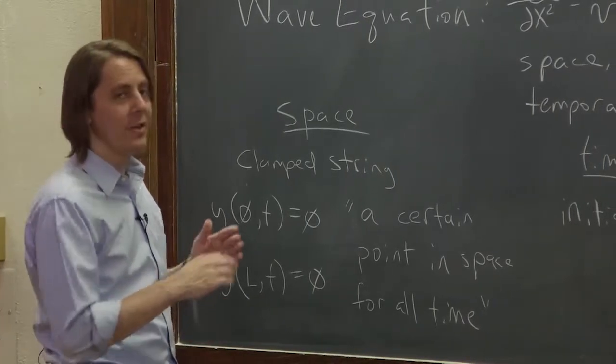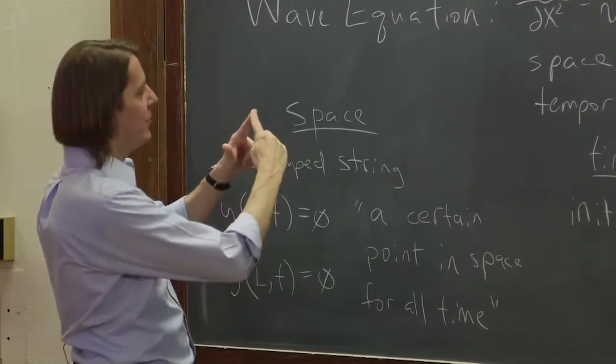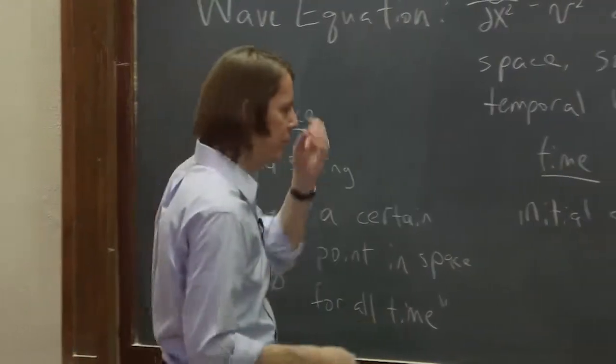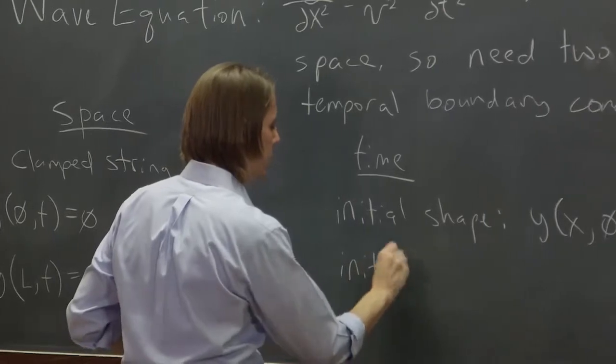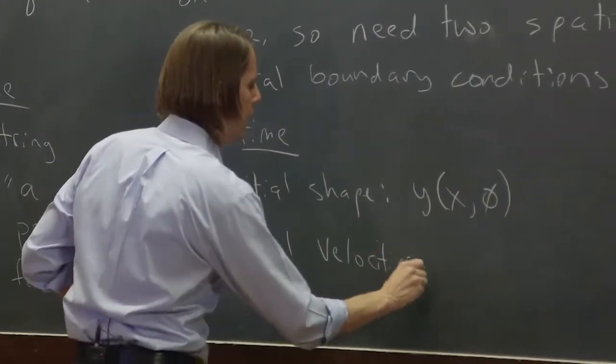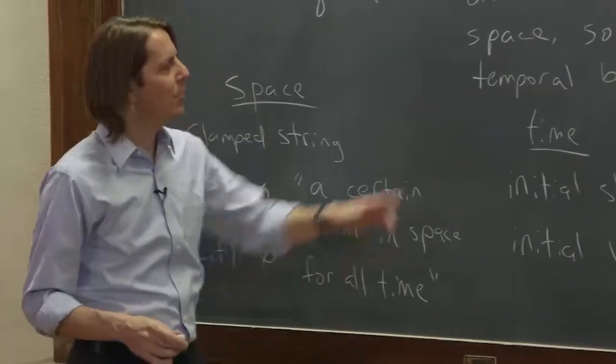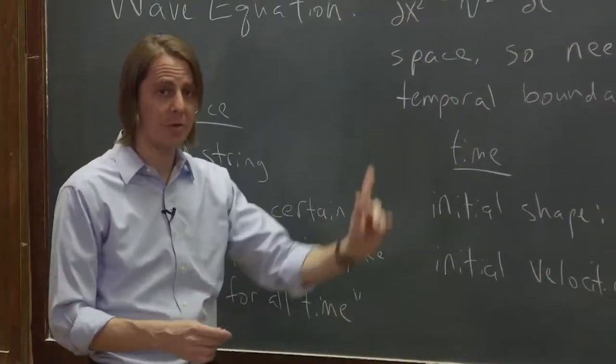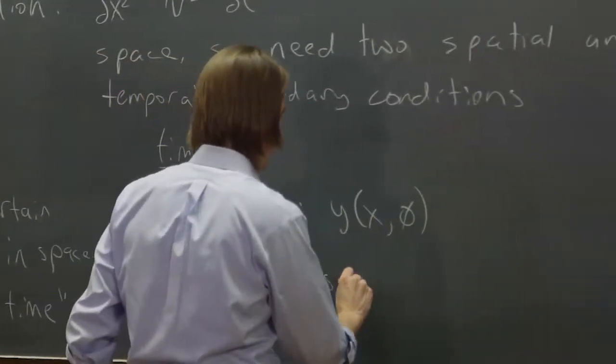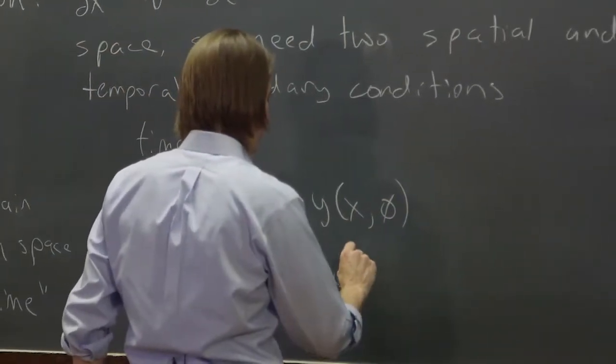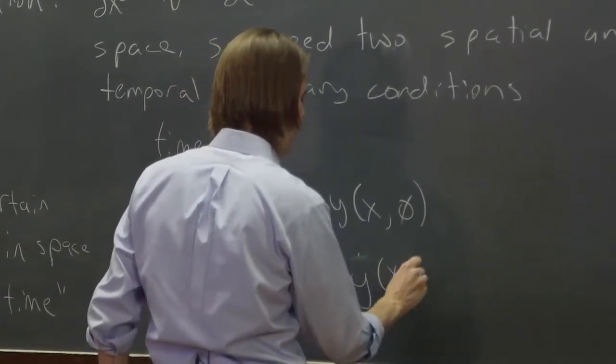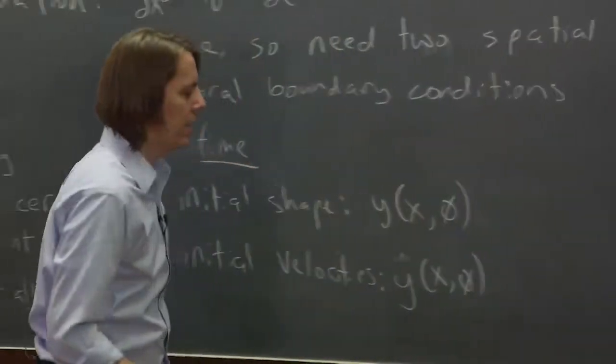And now we're saying we also need the initial velocities. Even though we have this pulse, we need to know, is the left side going up and the right side going down, or vice versa, or what's it doing? So we need the initial velocities. And don't mix them up. This is the velocity down the medium. Here, I mean the transverse velocity of the string moving up and down. So we've got two velocities running around in here: y dot, dy/dt of x and 0.